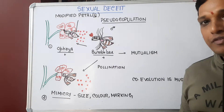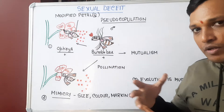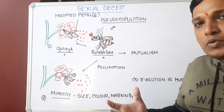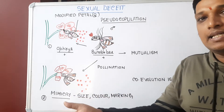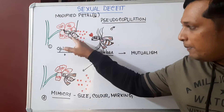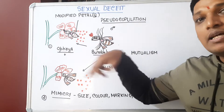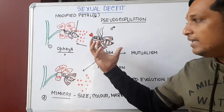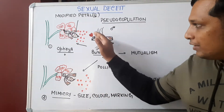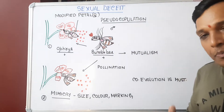So what happens is, when the male bumblebee is in search of a female for copulation, it finds a flower. Since one of the petals of the flower has been modified to look like a female bee, the male won't be able to distinguish that it is a petal — it thinks it is a female bee. Apart from that, the flower releases certain chemicals similar to those of the female bee.